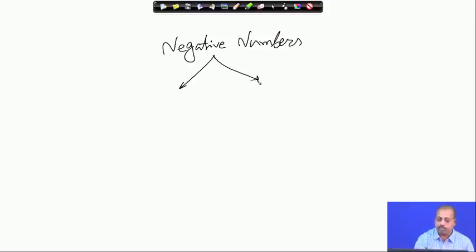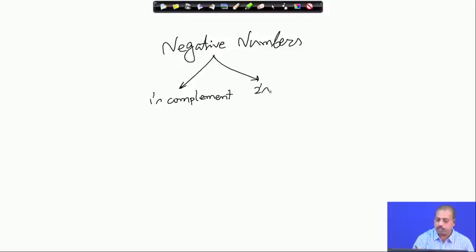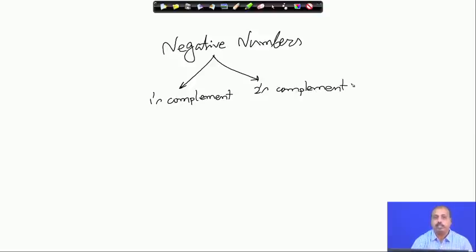One representation is known as one's complement representation and the other representation is known as two's complement representation. In one's complement representation, we take the complement of each of the bits to represent a negative number.